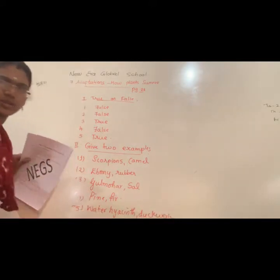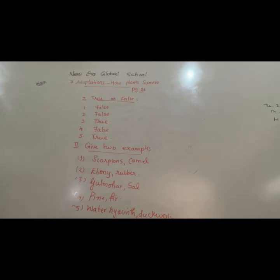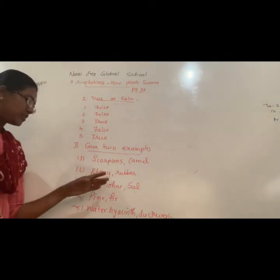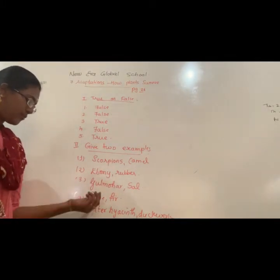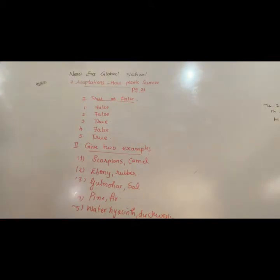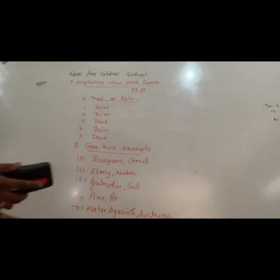Now I am repeating again. True or false: first one — false, second one — false, third one — true, fourth one — false, fifth one — true. And give two examples: first — scorpion and camel, second — ebony and rubber, third — gulmohar and sal, fourth — pine and fir, fifth — water hyacinth and duckweed.